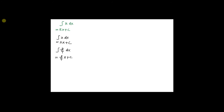Now we proceed to the second formula. For the integration of ax^n dx, you have x to the power n. This equals ax, where the power increases by 1 to become n plus 1, divided by n plus 1, plus c. For all indefinite integrals, you have to put plus c at the end.